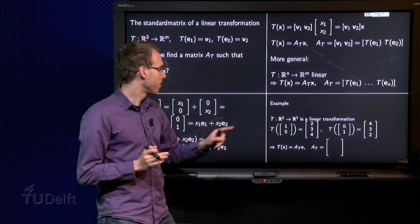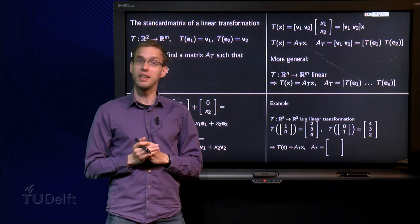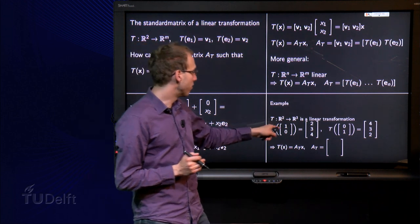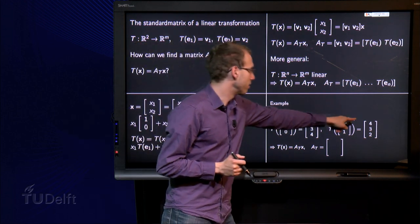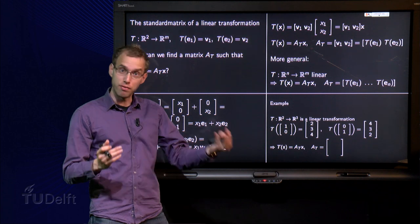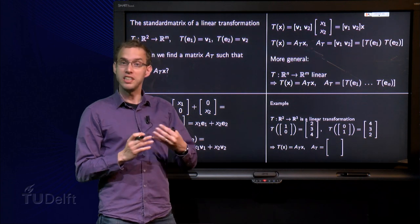Here's an example. We have T from R2 to R3, a linear transformation. T of 1, 0 equals 2, 3, 4. And T of 0, 1 equals 4, 2, 3. How can we find the matrix? Well it's easy.